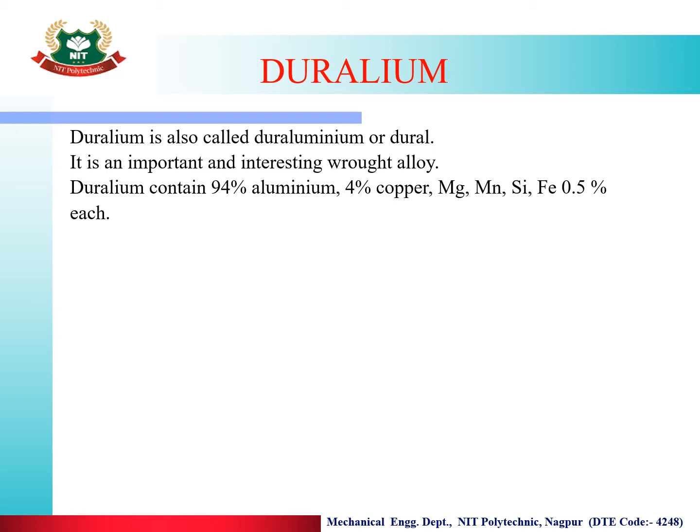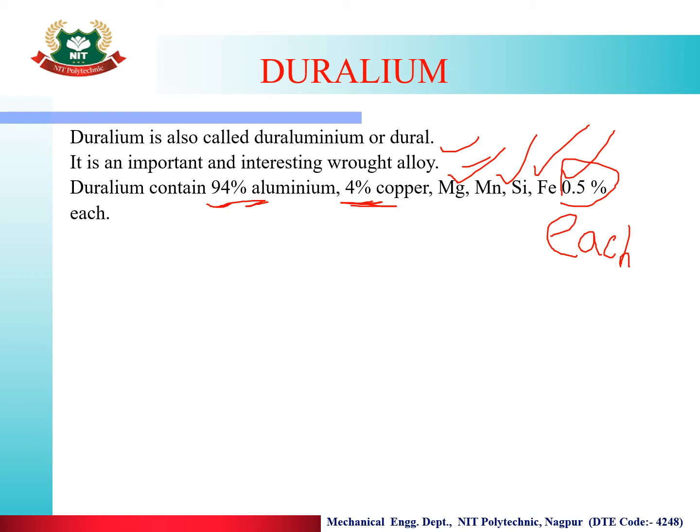The composition of Duralumin is: 94% Aluminium, 4% Copper, and 0.5% each of Magnesium, Silicon and Iron.